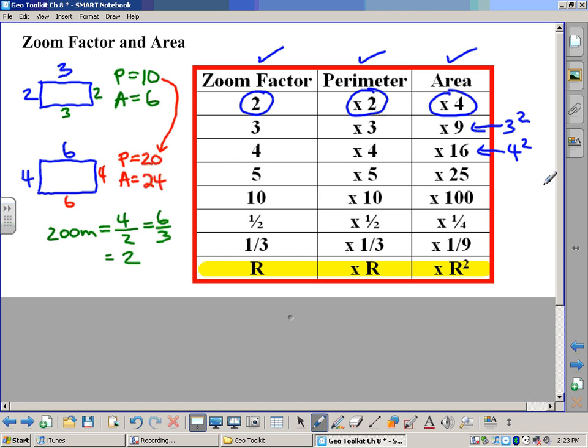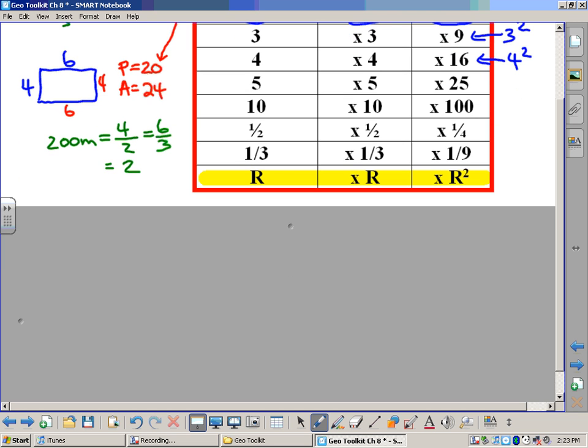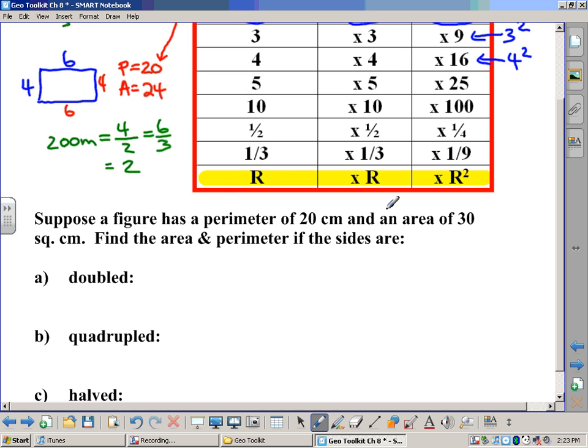And what's powerful about this is that you don't actually need to have the actual shape here and the dimensions, you can still make decisions about what the new perimeter and area is going to be. So let me show you what I mean by that. If I were to take a figure, and right over here I have, suppose a figure has a perimeter of 20 and an area of 30 square centimeters. Find the area and perimeter if the sides are either doubled or quadrupled or halved.